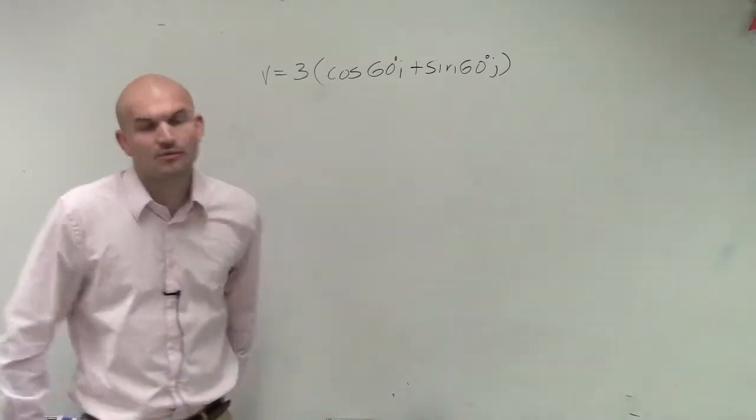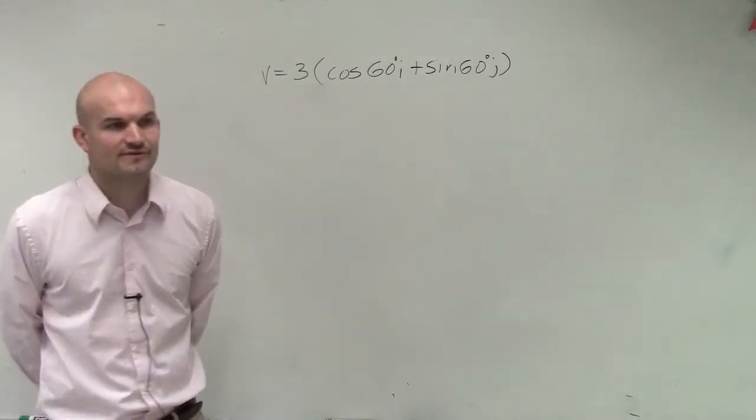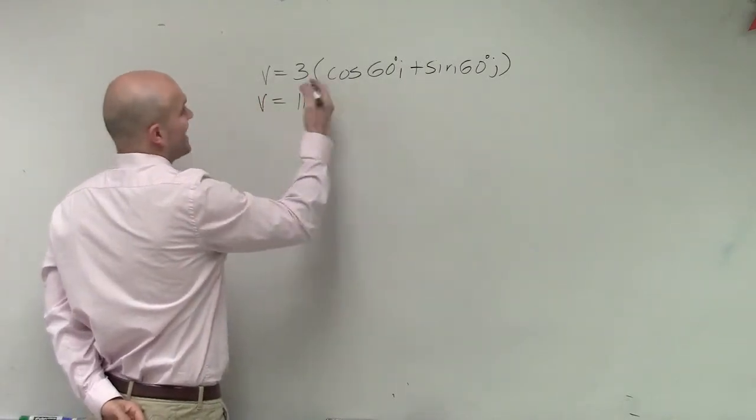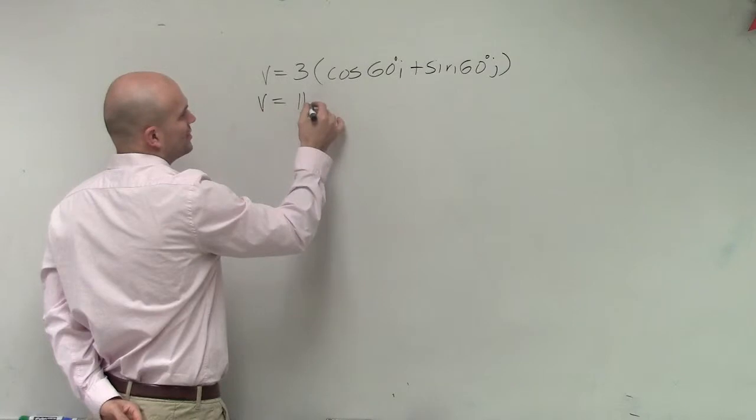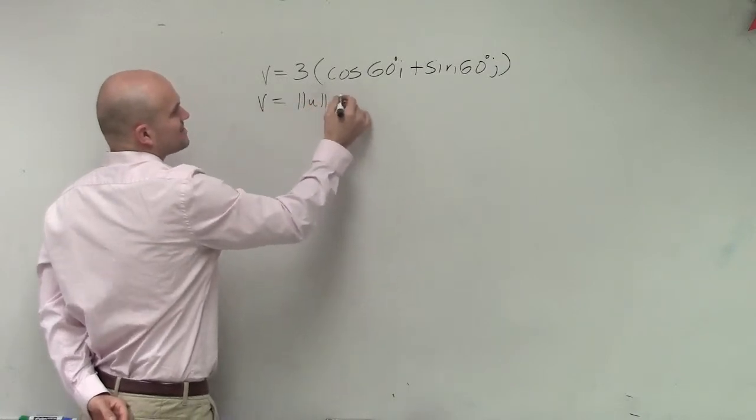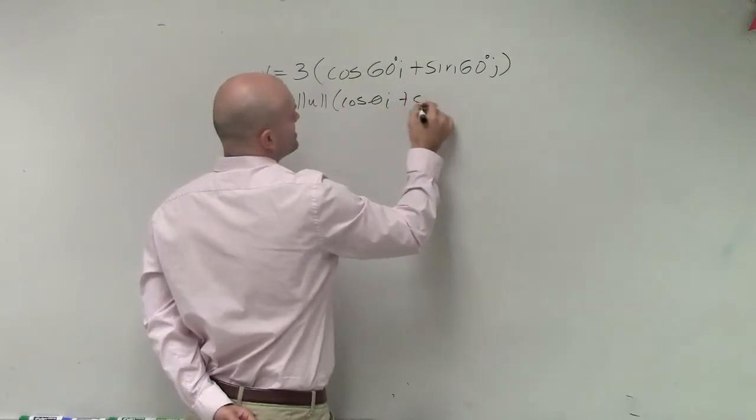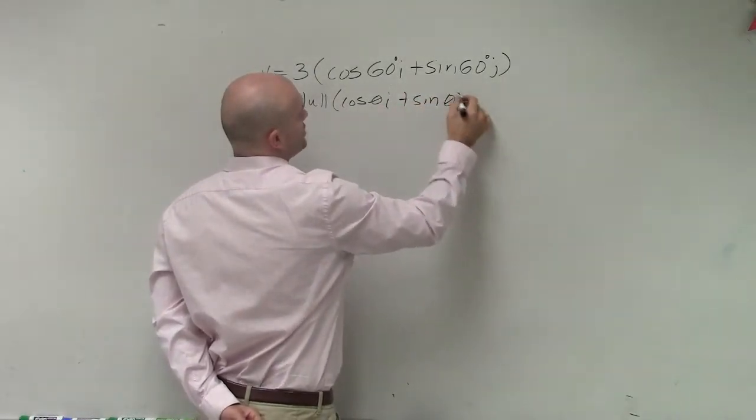So in general, remember we went through this whole different spiel of v equals the magnitude of any other vector, let's call vector u, times the cosine of theta i plus the sine of theta j.